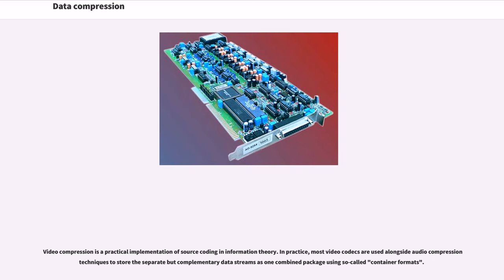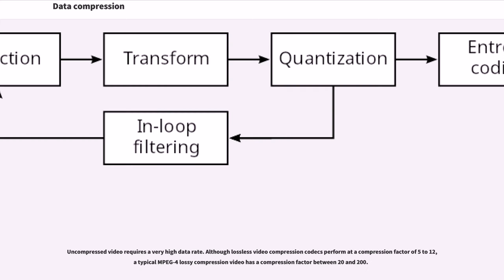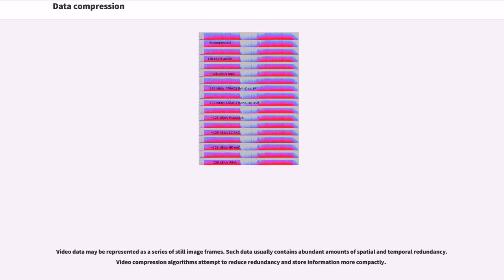Video compression is a practical implementation of source coding and information theory. In practice, most video codecs are used alongside audio compression techniques to store the separate but complementary data streams as one combined package using so-called container formats. Uncompressed video requires a very high data rate. Although lossless video compression codecs perform at a compression factor of 5 to 12, a typical MPEG-4 lossy compression video has a compression factor between 20 and 200. Video data may be represented as a series of still image frames. Such data usually contains abundant amounts of spatial and temporal redundancy.